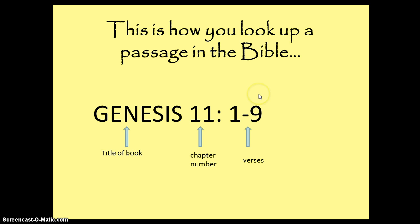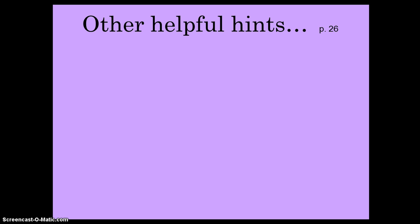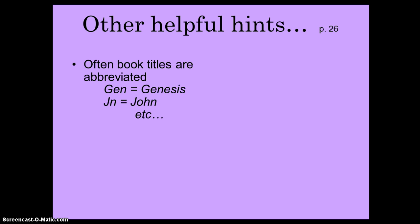If you look on page 26 under 'How to Locate and Read Bible References,' there are a few more helpful hints. Oftentimes, book titles get abbreviated — you guys abbreviate things all the time, like LOL and stuff like that. So we do the same thing here. G-E-N becomes Genesis. Capital J-N becomes the Gospel of John, etc.